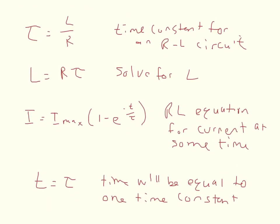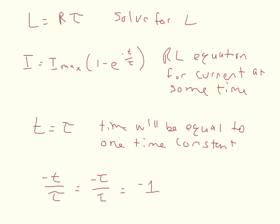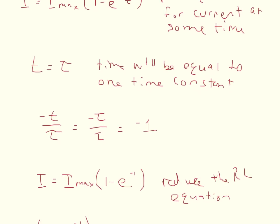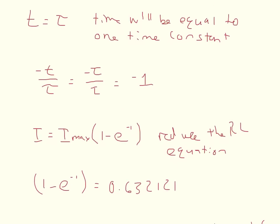And so we got to set those equal to each other. And then we can basically set up a ratio. So if we're finding what the negative T over tau, since T equals tau in this case, it would be basically negative tau over tau, which is equal to negative one. Any number divided by itself is equal to one. So that ends up reducing our equation to I max times one minus E to the negative one. And one minus E to the negative one will reduce further. If you just plug that in your calculator, you should get something like one minus E to the negative one is 0.632121.